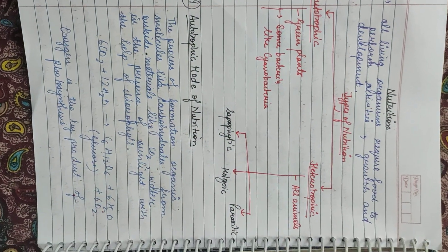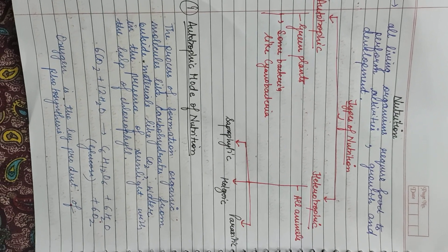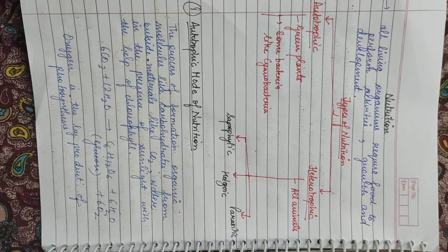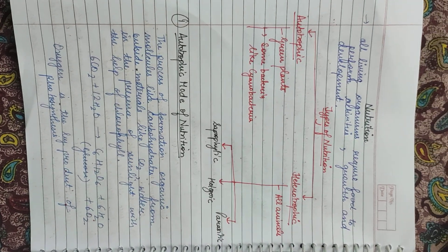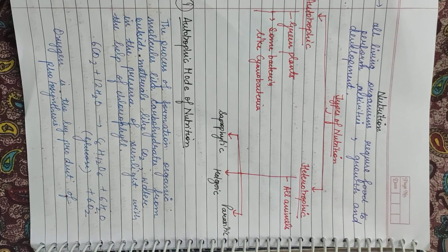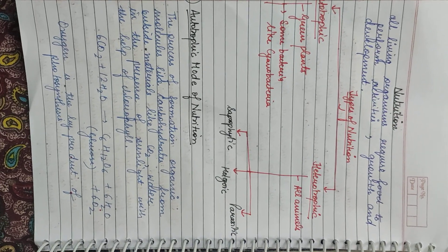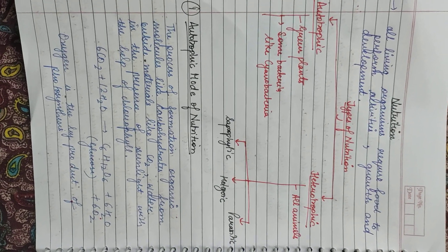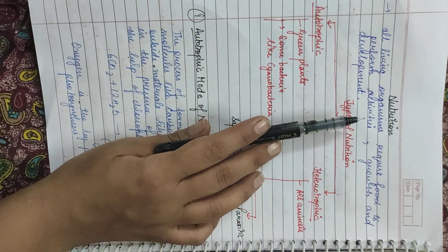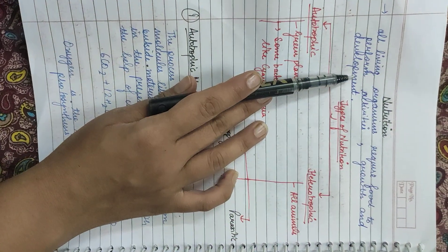Nutrition means obtaining food — food is obtained from outside the body. Some organisms eat plants, some organisms eat other animals. The main purpose is that they obtain food from outside their body and utilize the energy from that food to perform basic body functions, daily activities, and for growth and development.